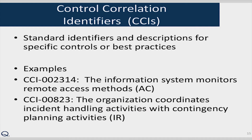Control Correlation Identifiers, or CCIs, are standard identifiers and descriptions for specific controls or best practices. For example, CCI 002314: 'The information system monitors remote access methods,' from the AC control family. And CCI 00823: 'The organization coordinates incident handling activities with contingency planning activities,' from the IR family. These give you exact information on what you are evaluating within each control.